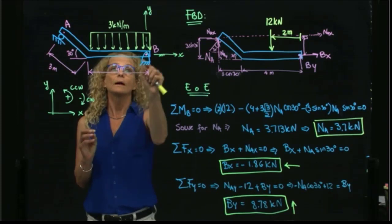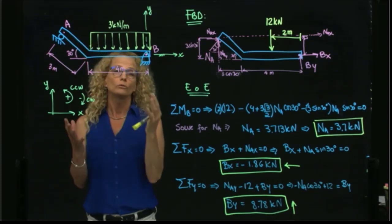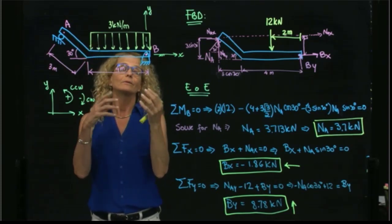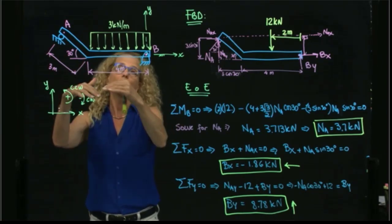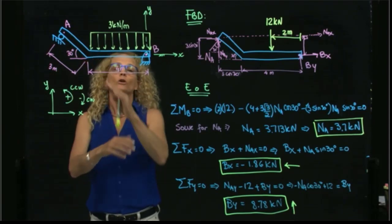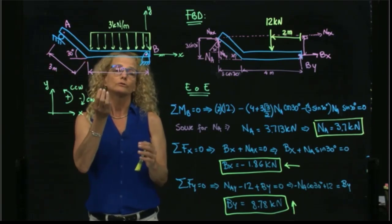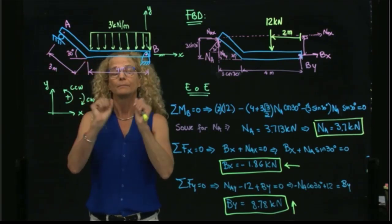And those are the three reaction forces for this problem. Remember that a rigid body in 2D has three degrees of freedom - three ways to move: to the right, up and down, or left, and it can rotate. So I need three reactions in order to have this system in equilibrium.